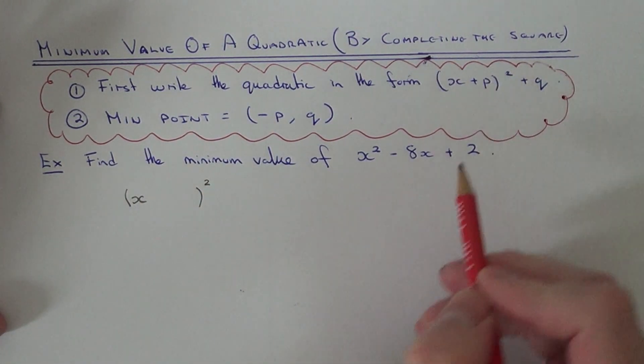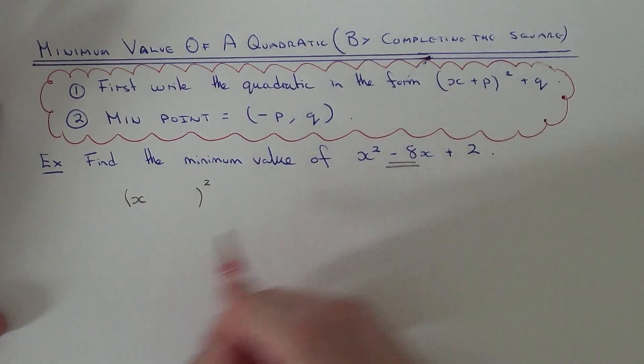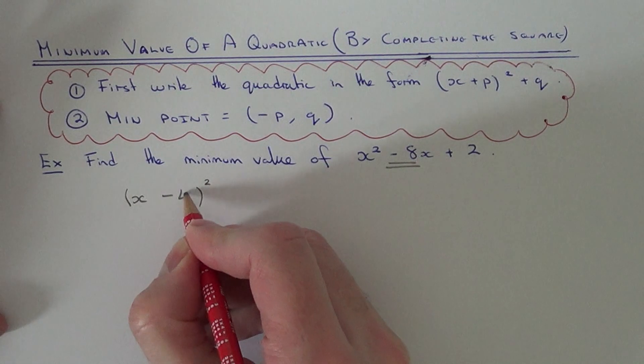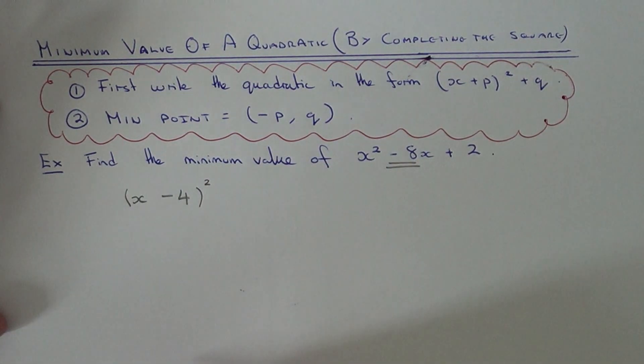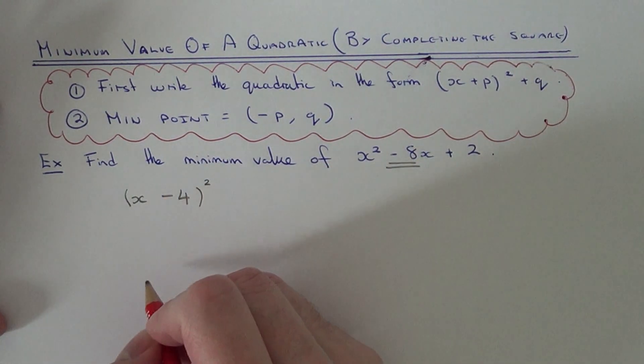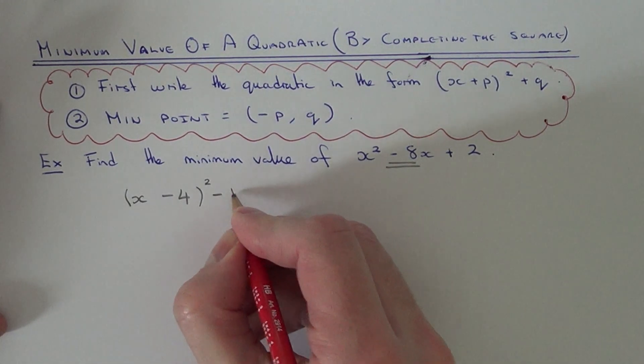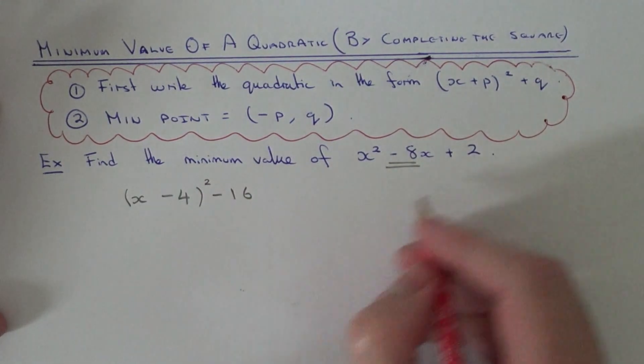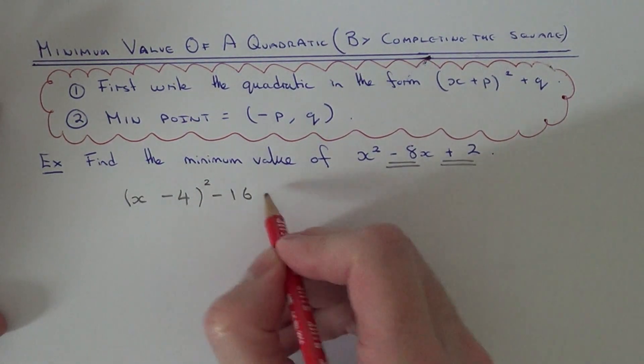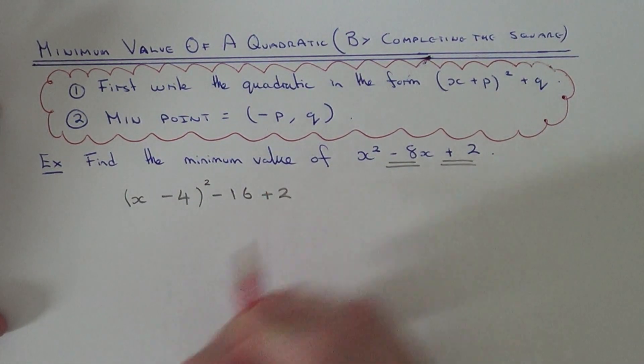So to get p we half the number before x. So half of minus 8 is minus 4. We then square this p value, minus 4 squared is 16, and then we subtract it off the end. And then we just copy down the plus 2 at the end.